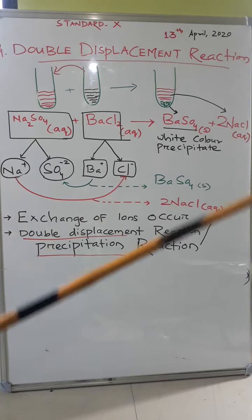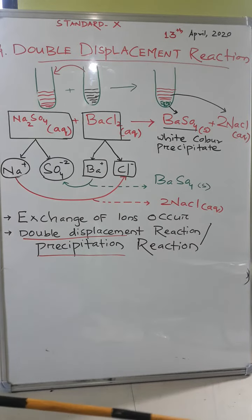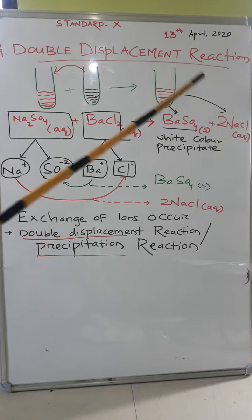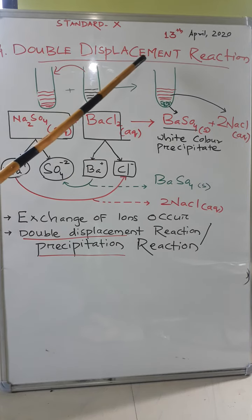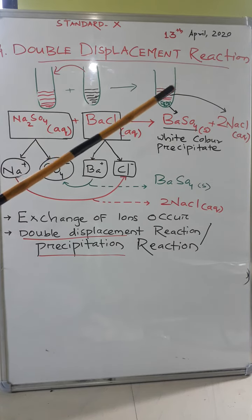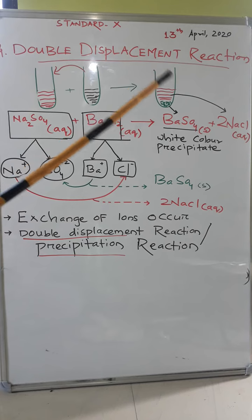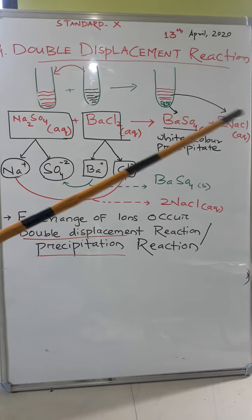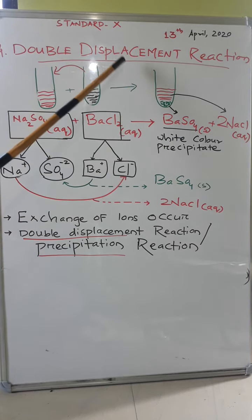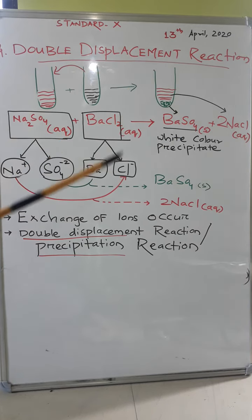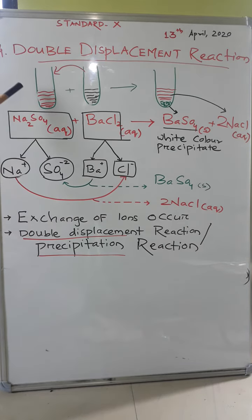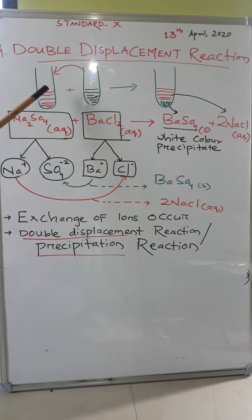Now we are going to discuss the fourth type of reaction, that is double displacement reaction. In displacement reactions, we already know a more reactive metal displaces a less reactive metal. So double displacement means there will be two displacements. For example, we have taken an aqueous solution of sodium sulfate (Na2SO4) in one test tube.